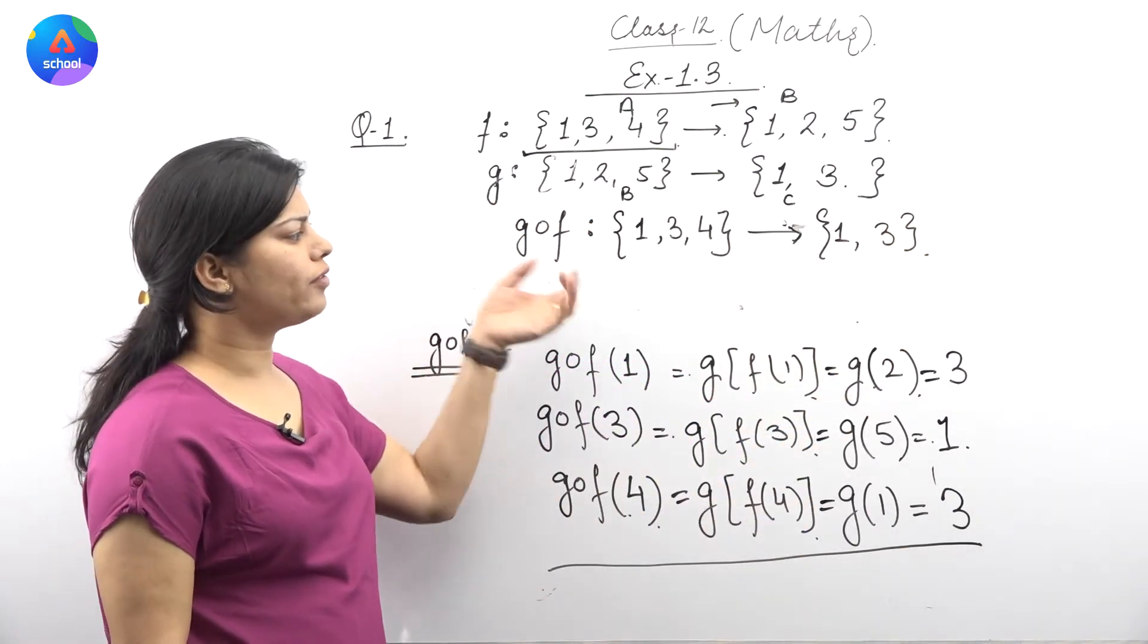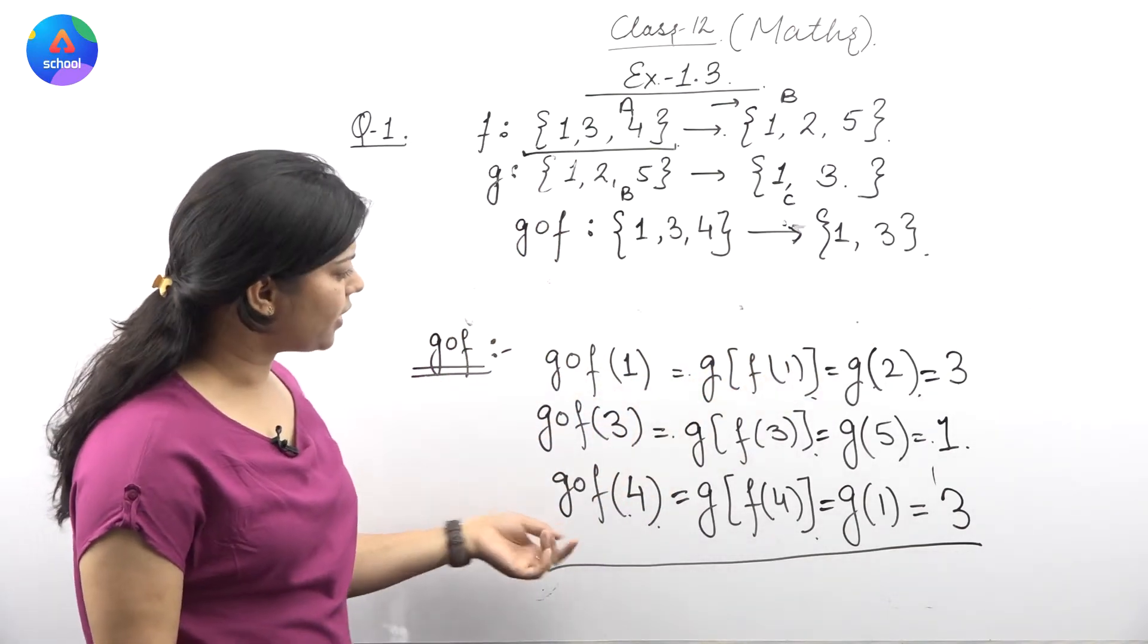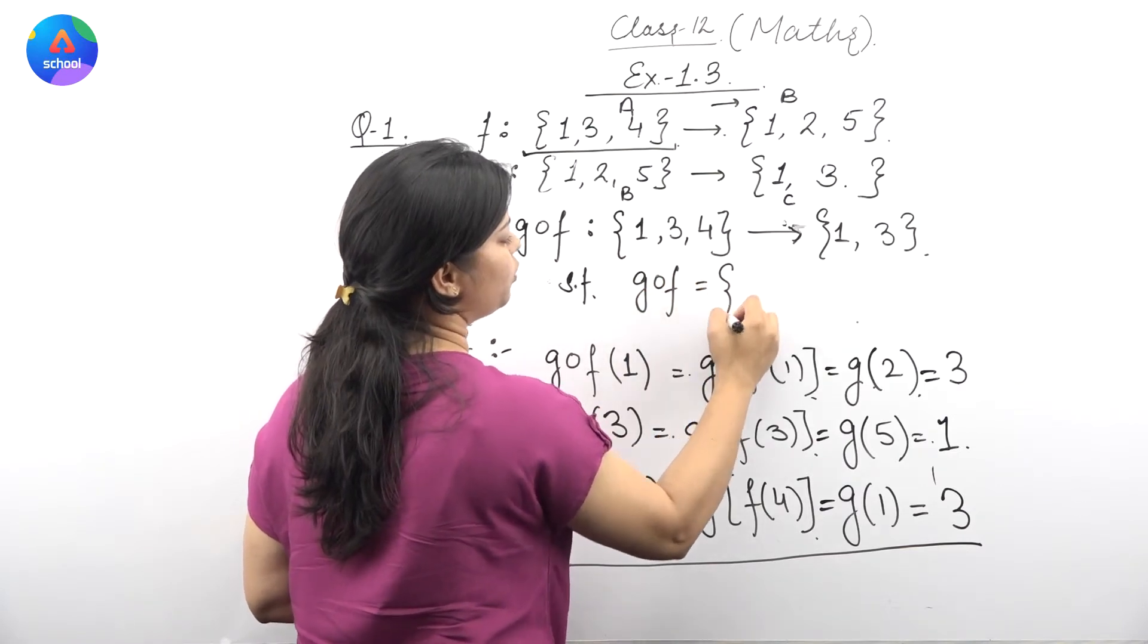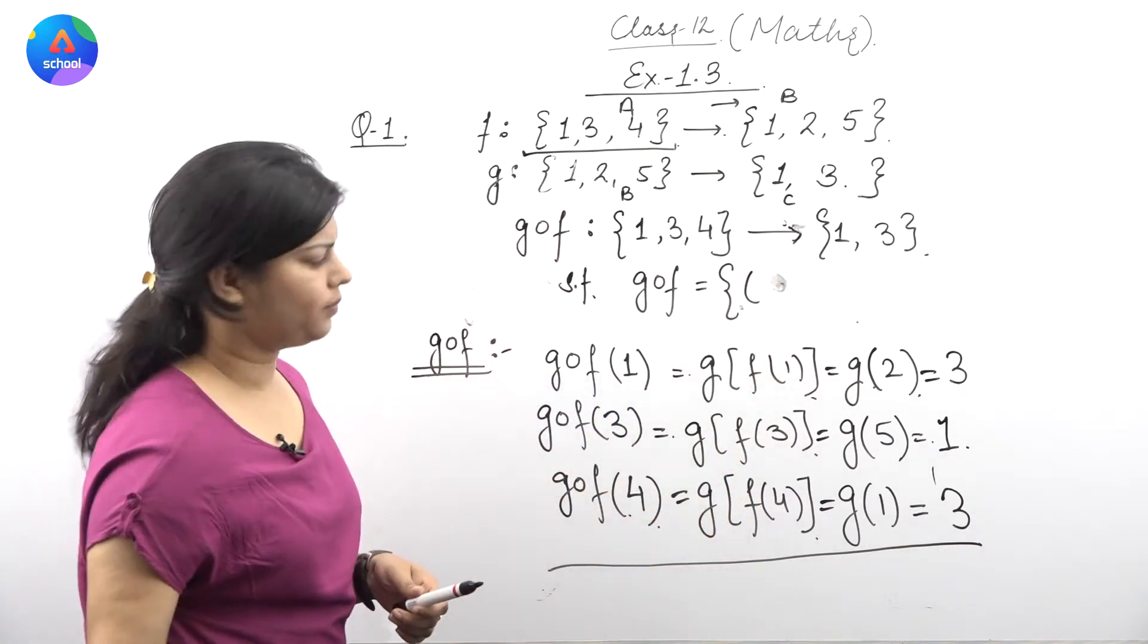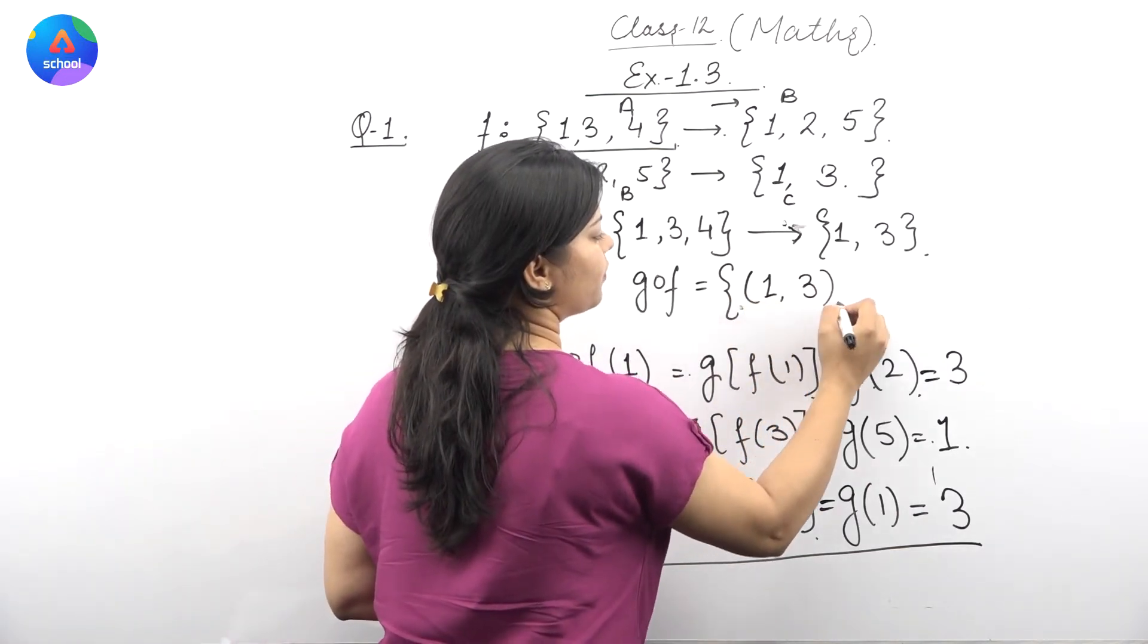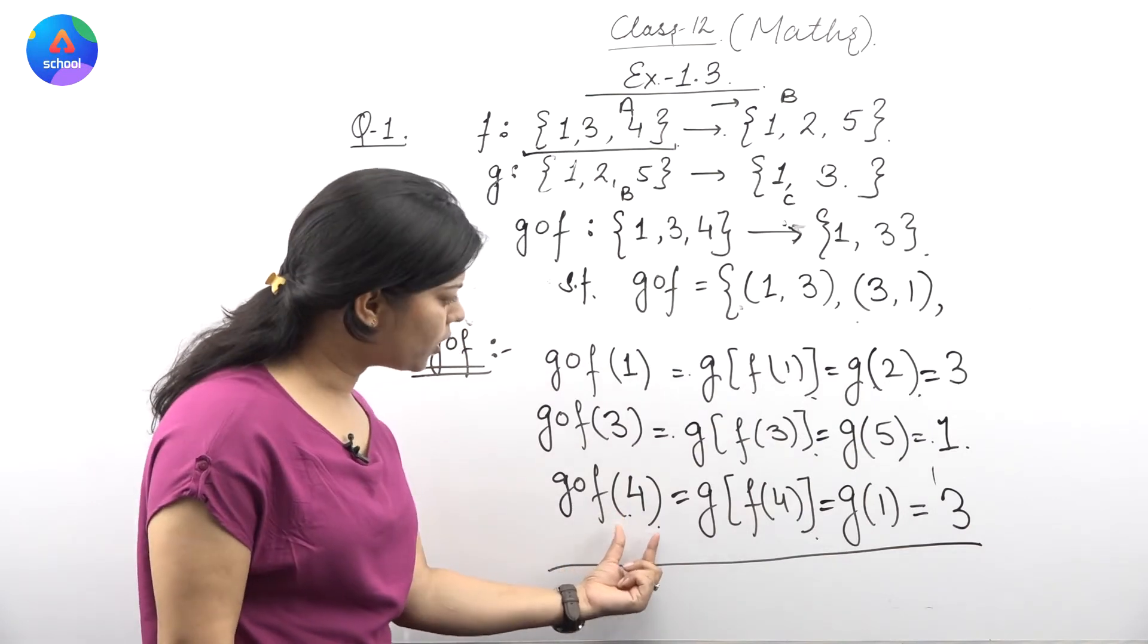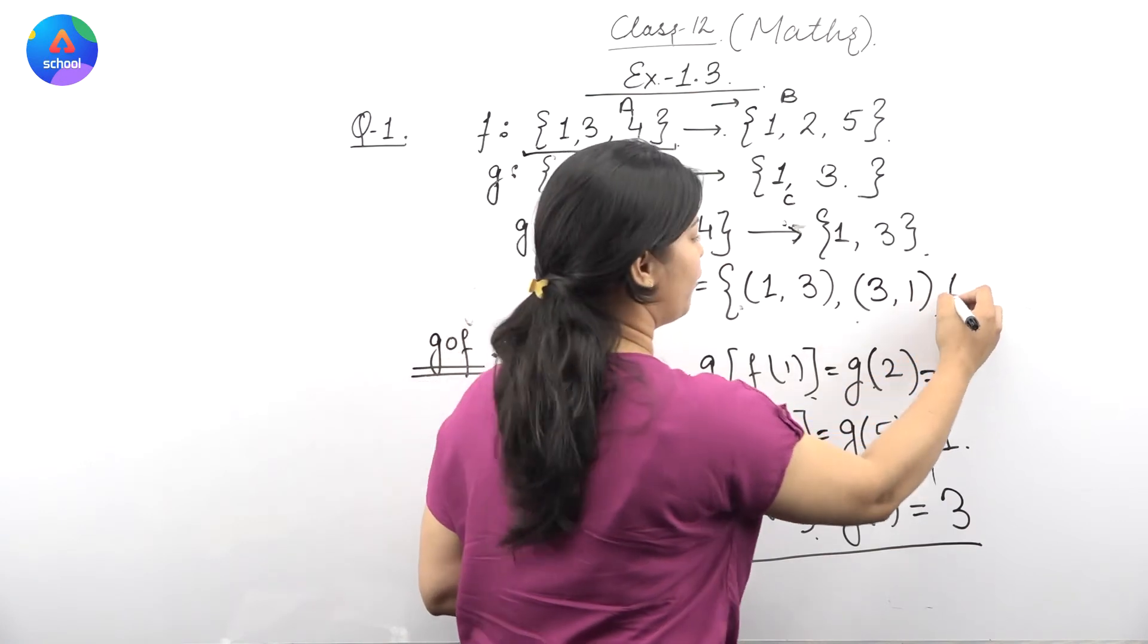This is our g∘f. We have defined it from this set to this set. How have we defined it? We got the images of all elements, such that we can write: g∘f equals {1 maps to 3, 3 maps to 1, and 4 maps to 3}.